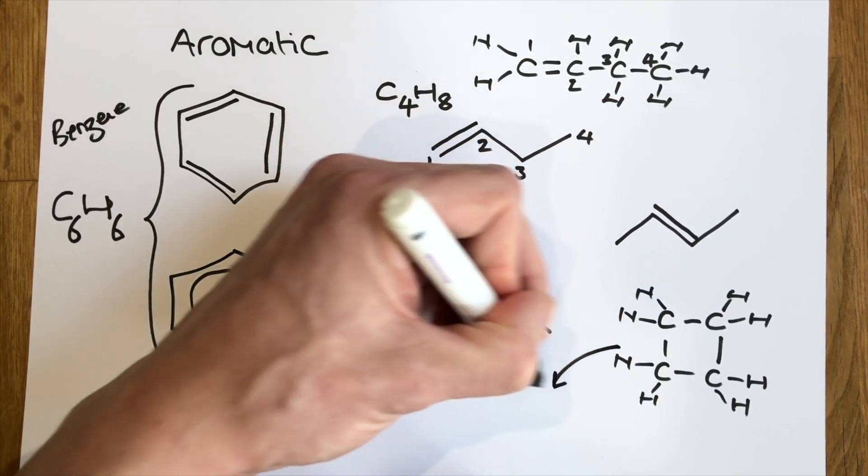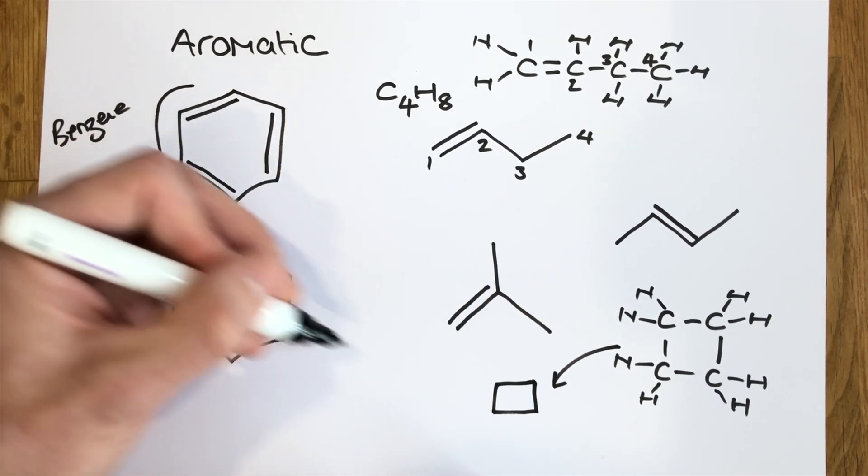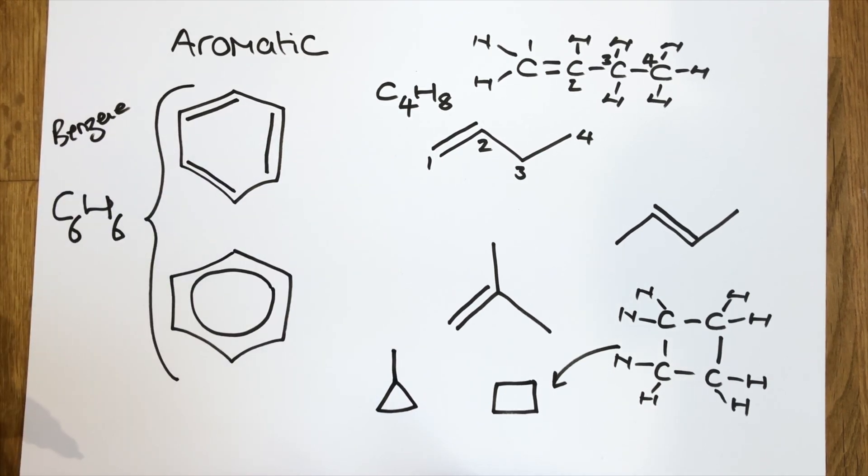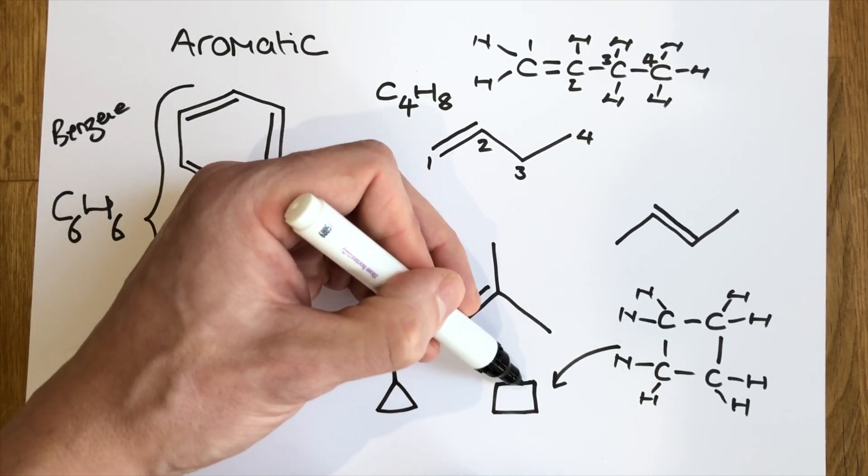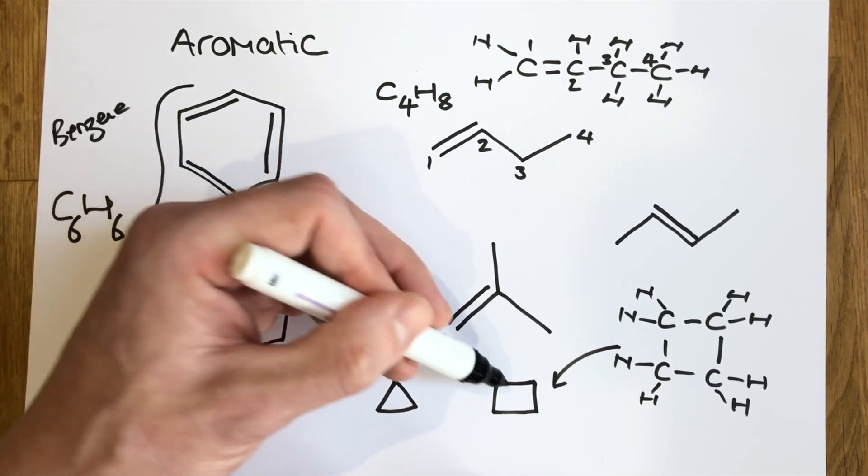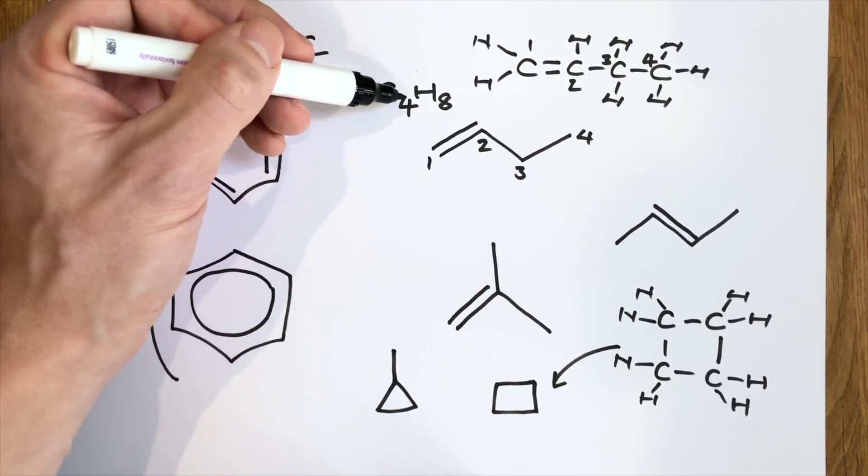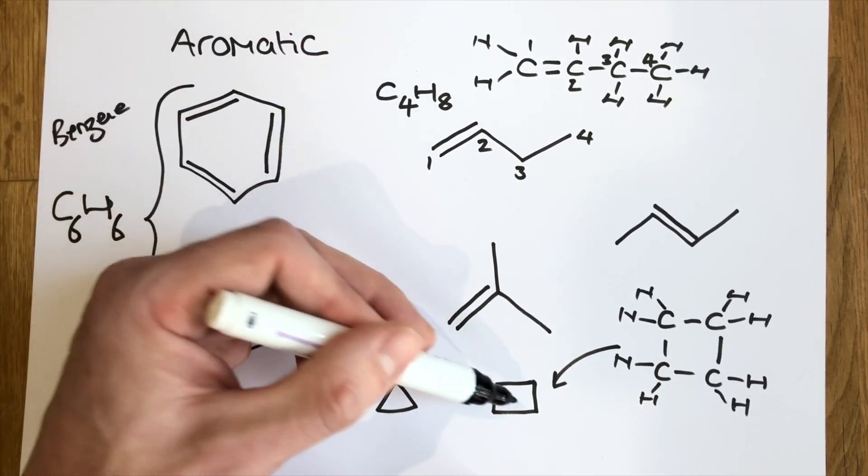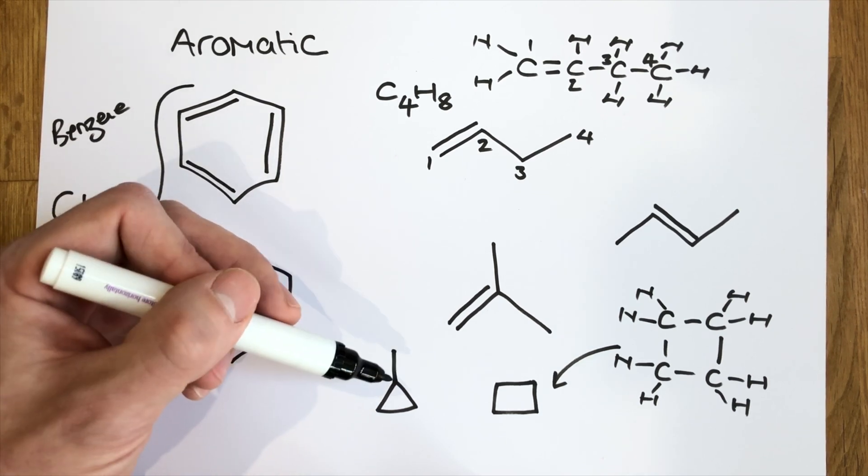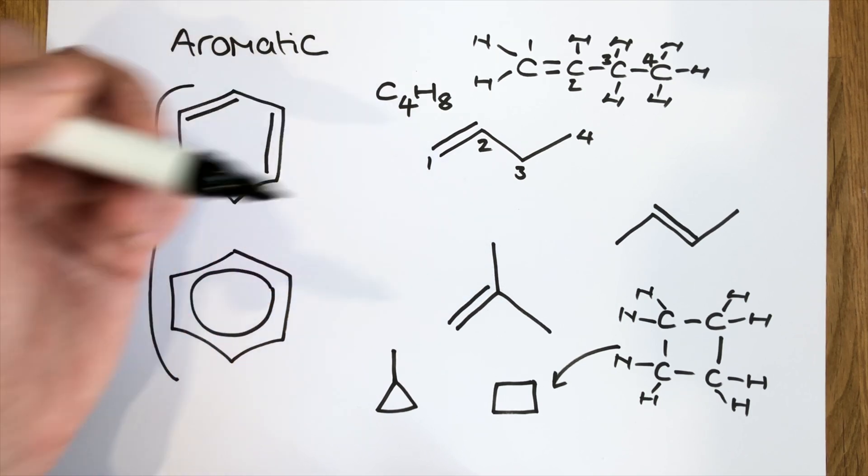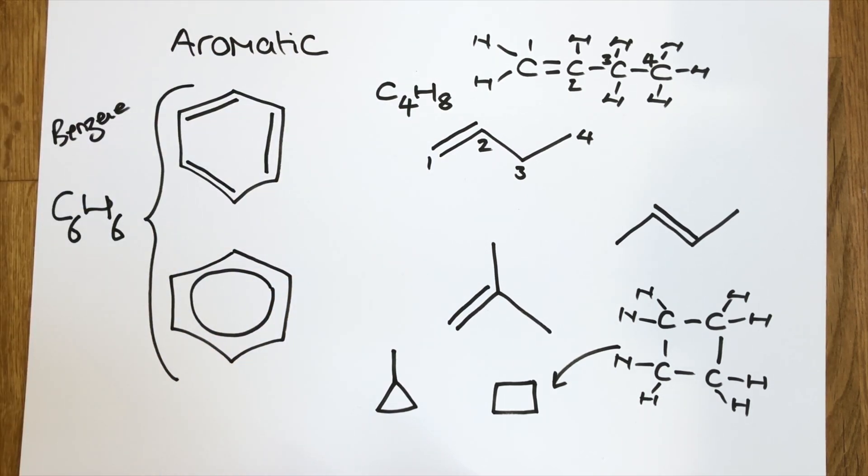This would be drawn in skeletal as quite literally a square. And a very similar structure would be a triangle with a branch. So this would be cyclobutane, and this would be methylcyclopropane. They both, like these, have the molecular formula C4H8. However, they are saturated, alicyclic structures, whereas these were unsaturated, aliphatic structures.